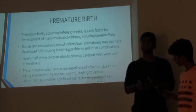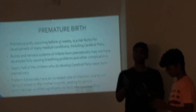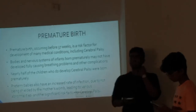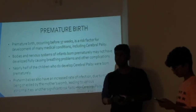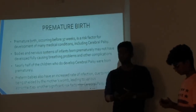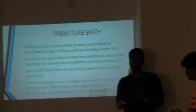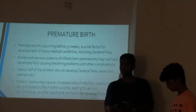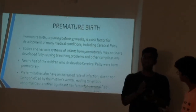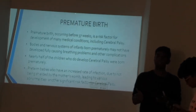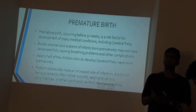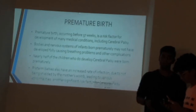Premature birth is basically birth before the 30th week of pregnancy. There are many cases for this to happen. Because the baby is born before the 30th week, the organs are not fully developed, so the child cannot adapt well to the external environment. Because the womb is no longer protecting the child, the child has many diseases, and most causes of Cerebral Palsy are associated with premature birth.